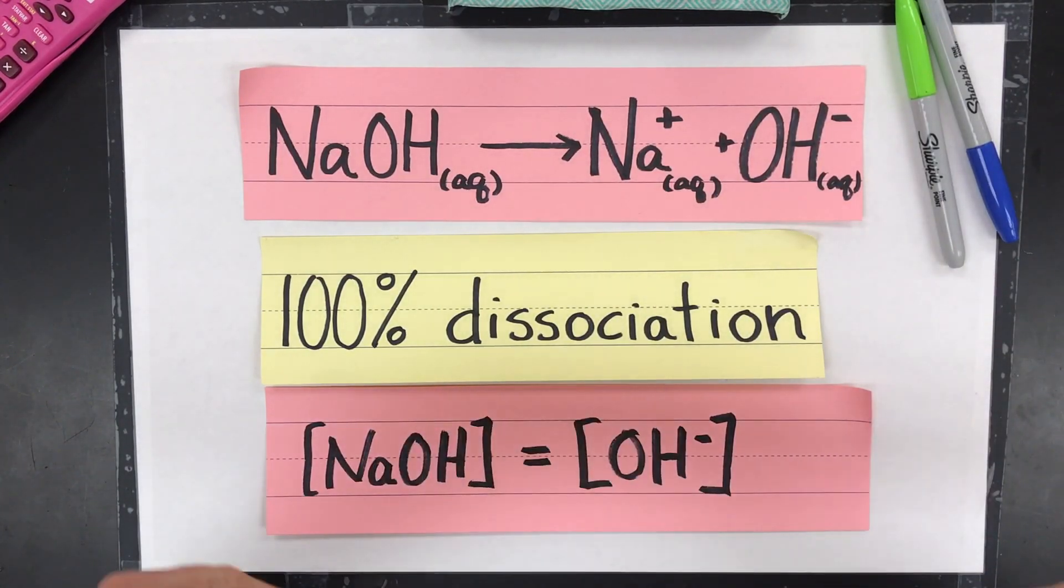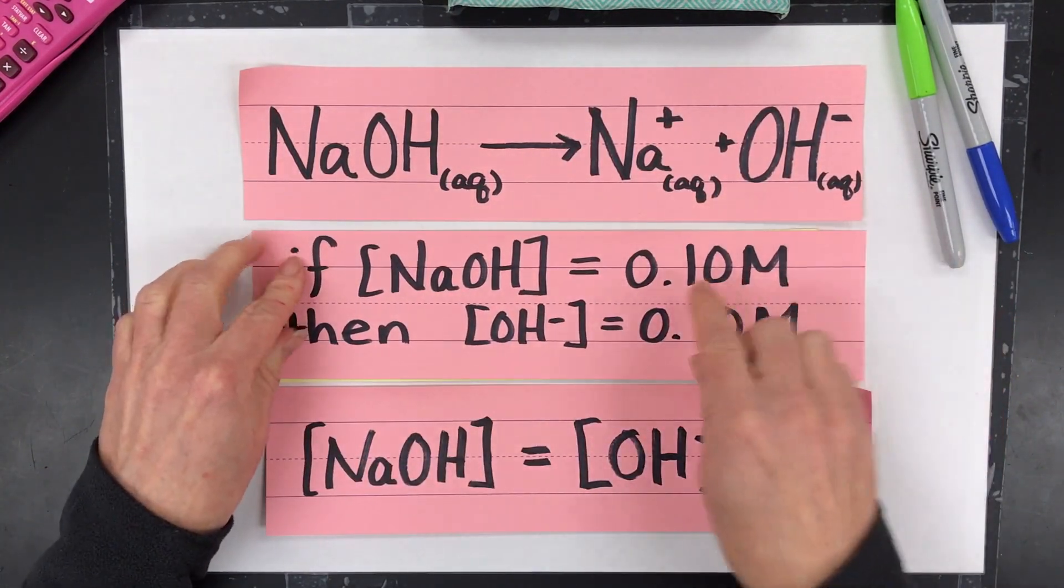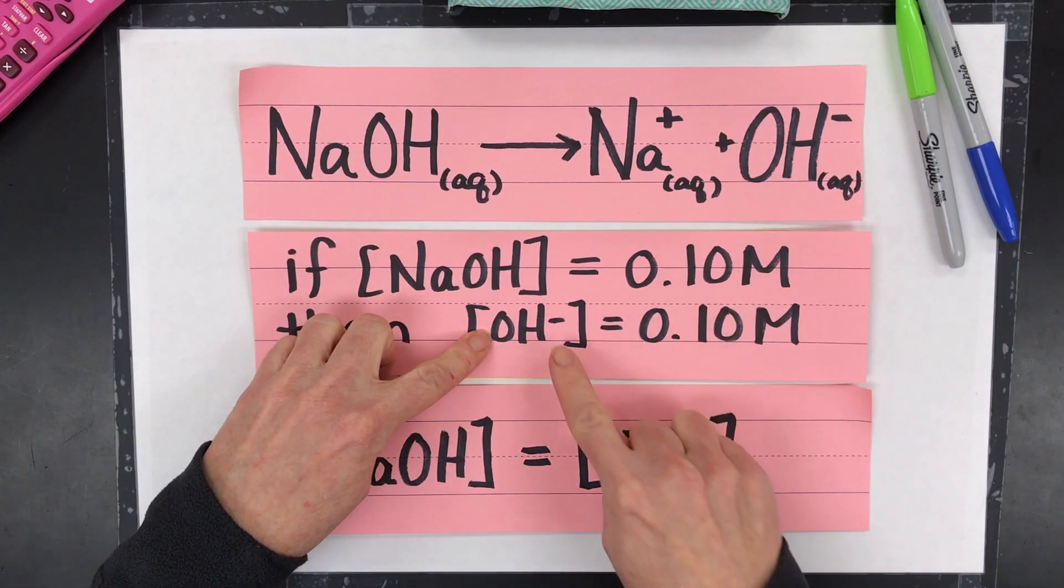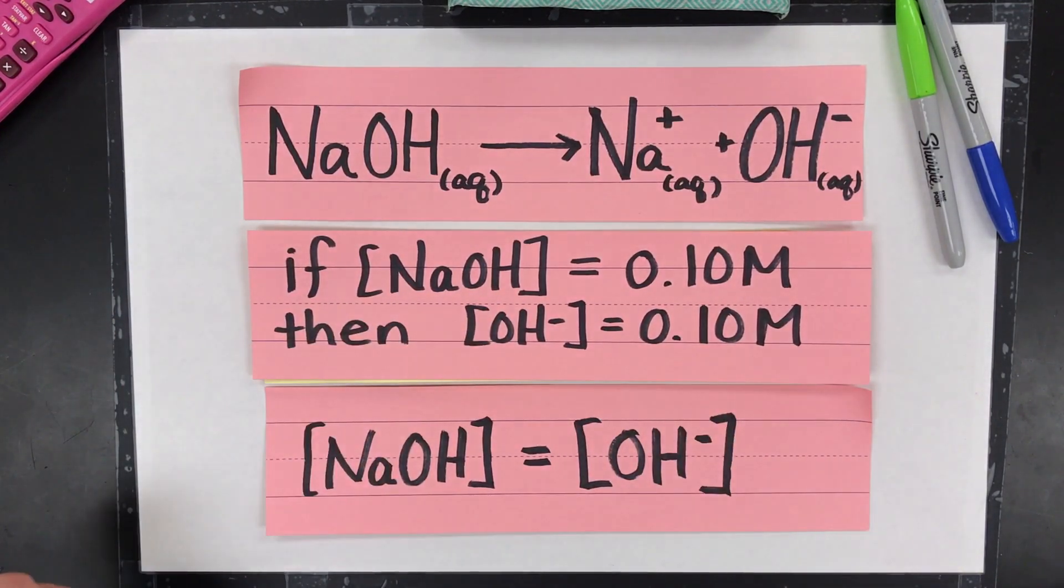So what does that mean? For example, if I have a 0.1 molar sodium hydroxide, I will have exactly 0.1 molar hydroxide.